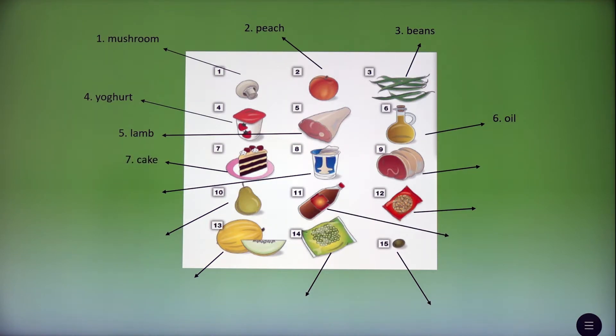Next one, seven, cake. Eight, cream. Next one, the ninth one. It's beef. Next one, pear. Eleventh, it's vinegar. Twelfth, nut or nuts if it's in plural. Next one, it's melon.